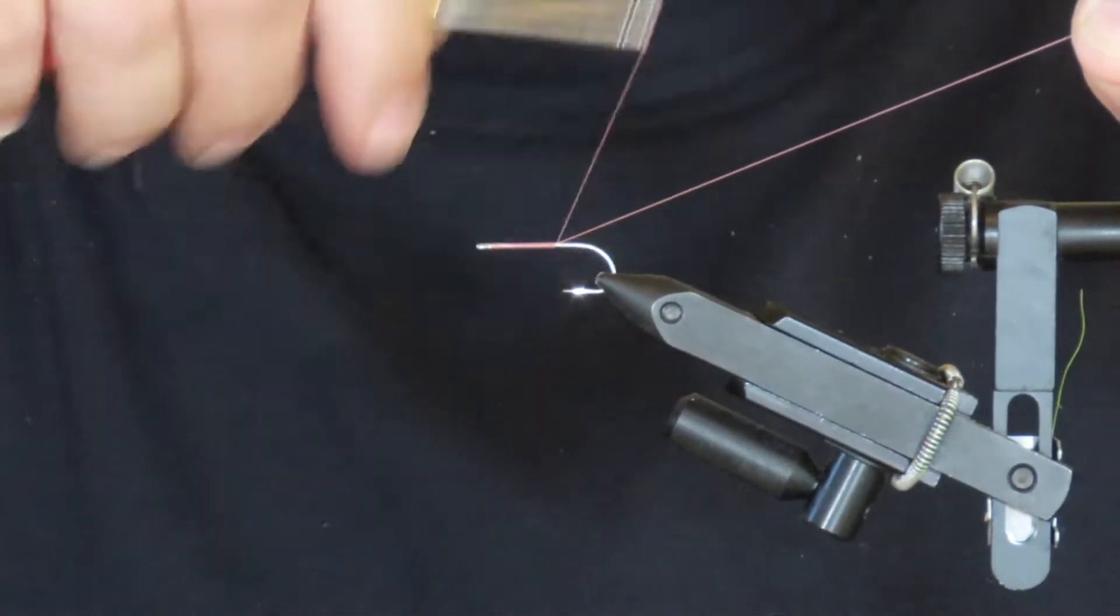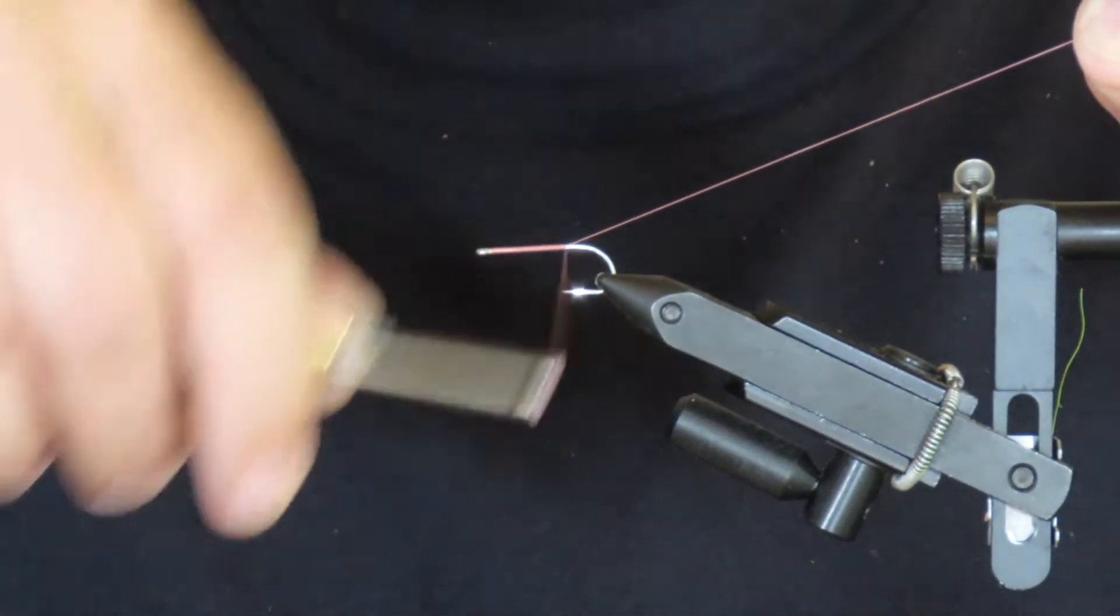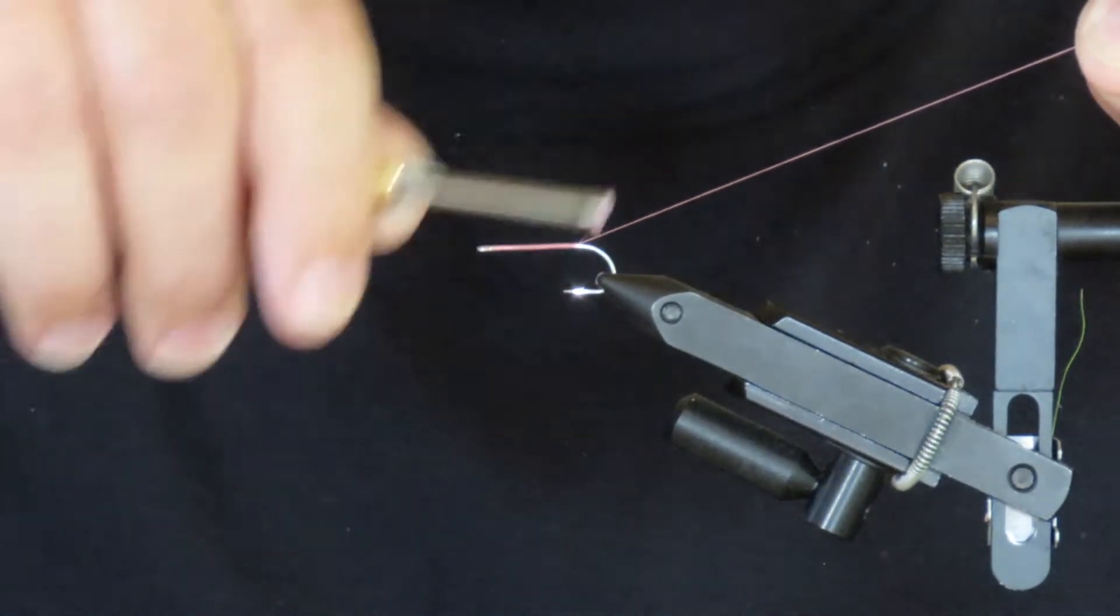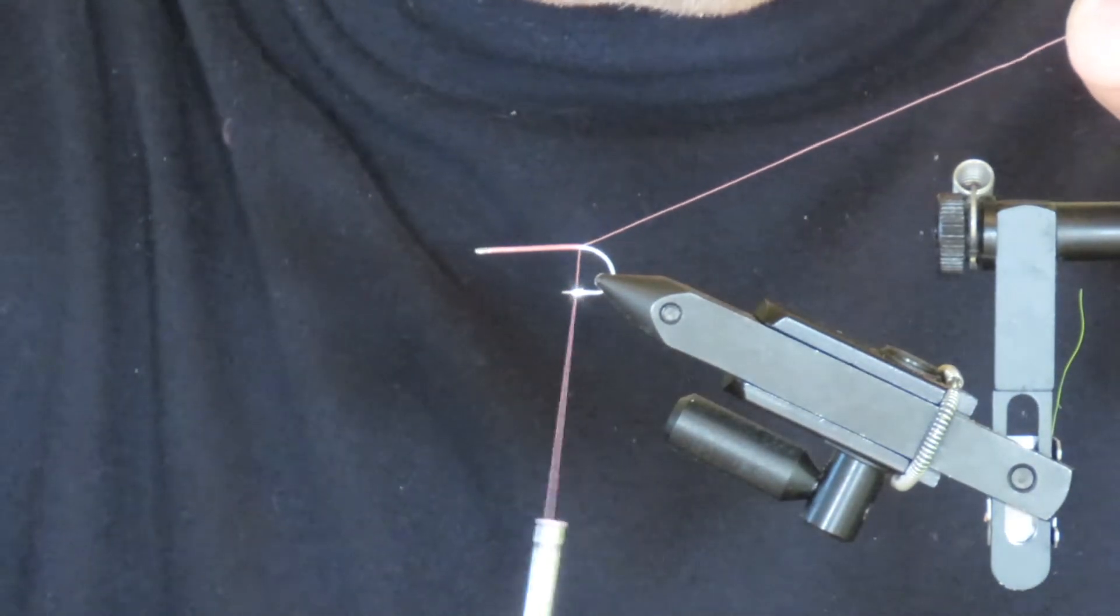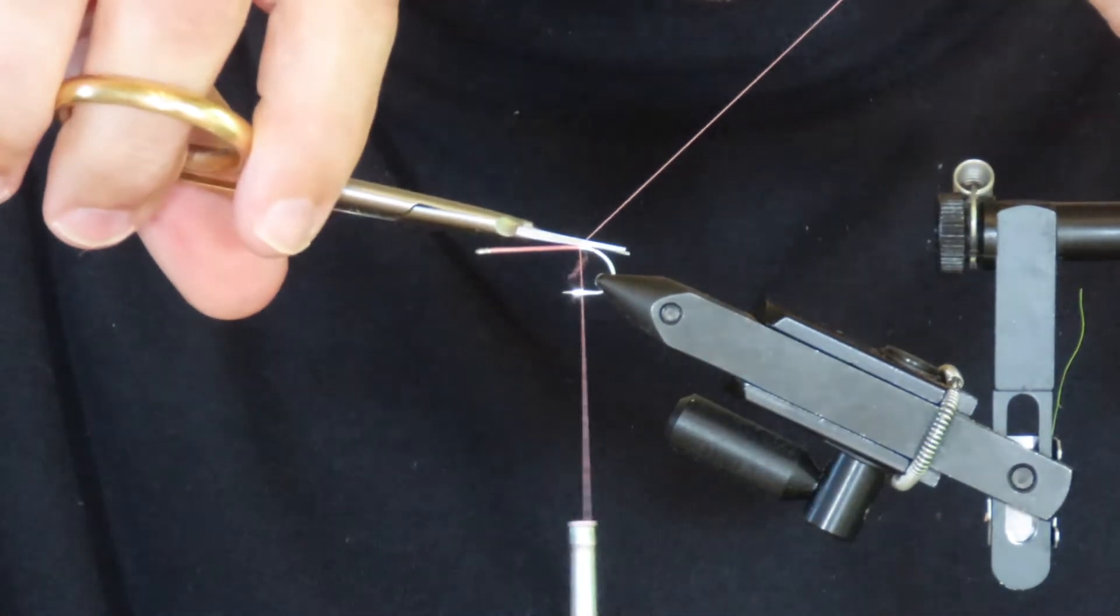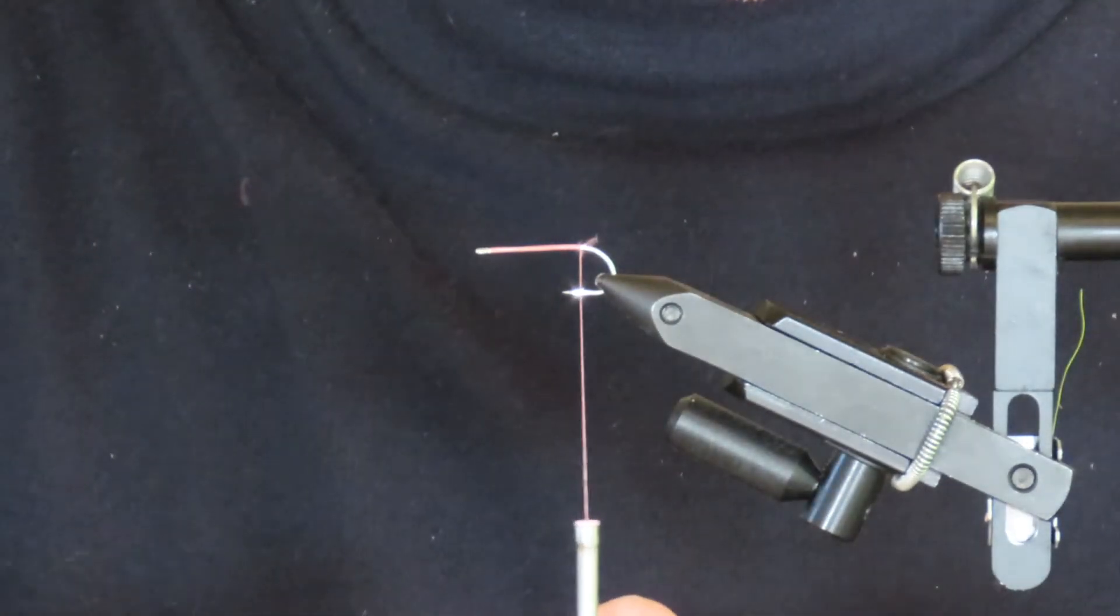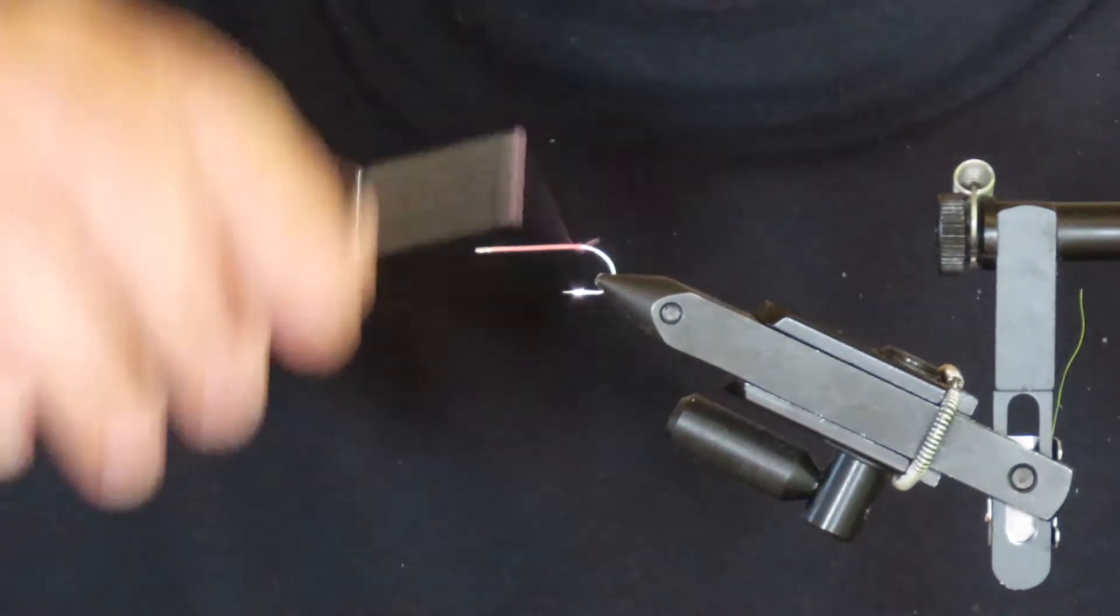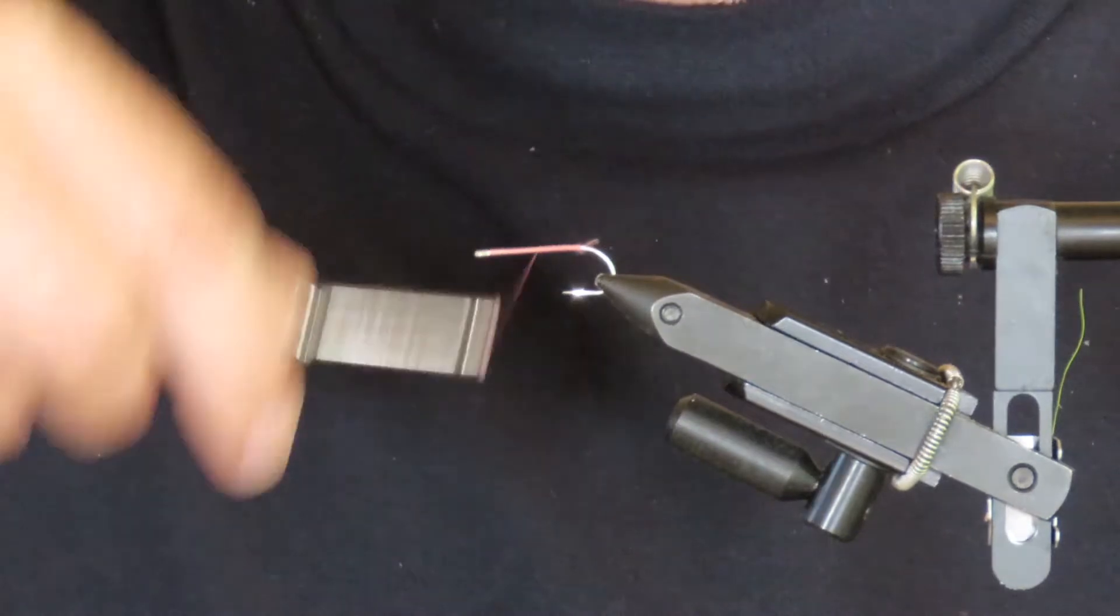The thread I'm using here is 6-0 pink uni-thread, and I'm laying down a thread base to the start of the bend, just right around there. Trim off the excess, then I'm going to wrap it back to about two-thirds of the distance back to the eye of the hook, just as if you were tying on a Clouser minnow.